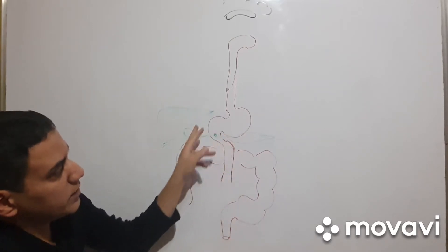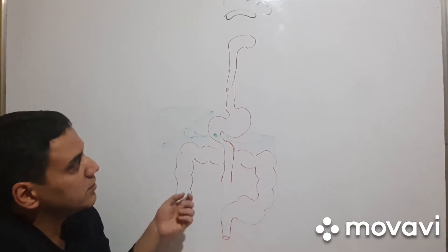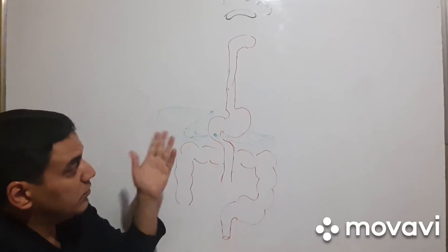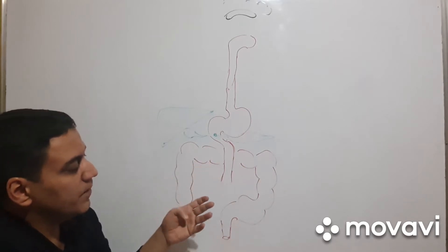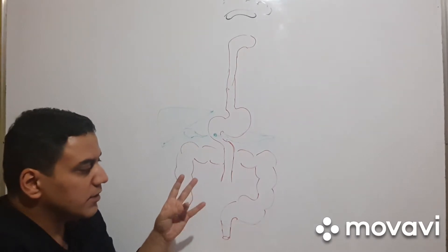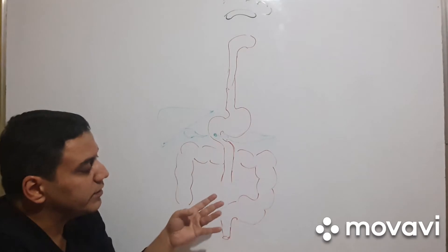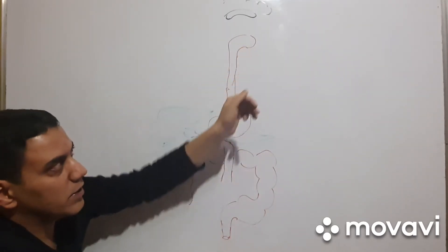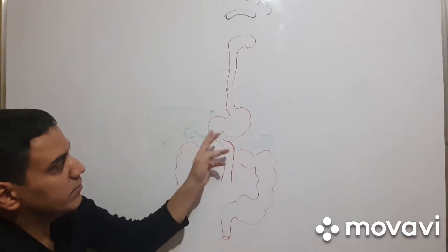Then the duodenum. The duodenum is the most important part in digestion because all digestion happens there, due to pancreatic juice containing three enzymes that digest three types of food: fat — phospholipase and lipase; protein — trypsin and chymotrypsinogen; and sugar — alpha-amylase. We also have alpha-amylase in the oral cavity. And bile, which comes from the gallbladder.